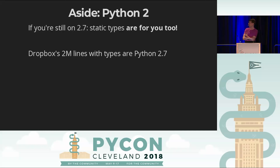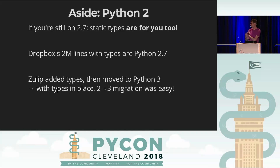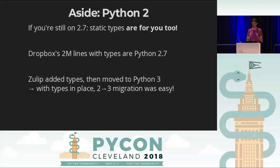Those two million lines of Dropbox that are typed are Python 2.7. Zulip added types first in 2016 before moving to Python 3. And once the types are in place, that migration to Python 3 was easy — because once the types pass in both Python 2 and 3, and you've sorted out the difference between bytes and Unicode so that the type checker accepts it in both modes, there's just not that much left.